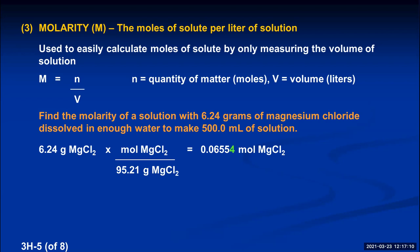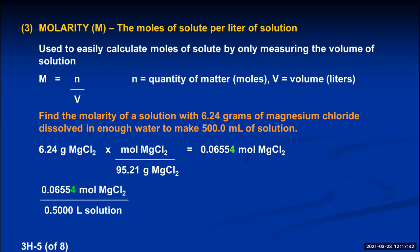We don't need moles of water — just the volume of solution in liters. Convert 500.0 milliliters to 0.5000 liters by moving the decimal three places left. Taking moles of magnesium chloride divided by 0.5000 liters gives moles per liter, which is molarity. With a three significant figure numerator divided by a four significant figure denominator, the answer is 0.131 — written as 0.131 moles of MgCl₂ per liter of solution, or abbreviated as 0.131 M, read as 0.131 molar magnesium chloride.